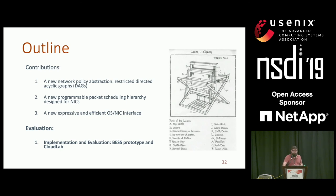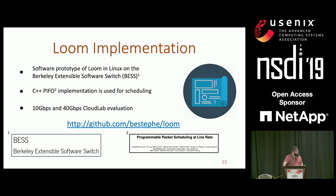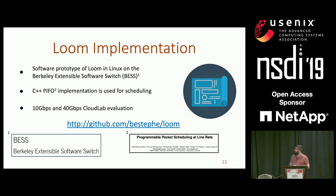Loom is currently a software prototype, not yet a hardware prototype, though hardware development is active. The prototype uses the Berkeley Extensible Software Switch, similar to Eiffel, and a C++ PIFO implementation. Evaluations are done at 10 and 40 gigabit on CloudLab. Loom is open source — the code is available on GitHub.